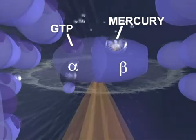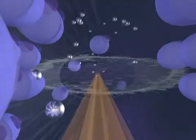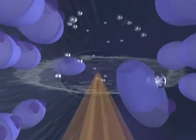Since bound GTP normally provides the energy which allows tubulin molecules to attach to one another, mercury ions bound to these sites prevent tubulin proteins from linking together.